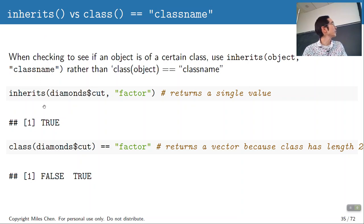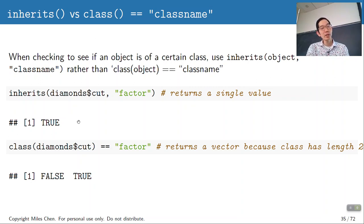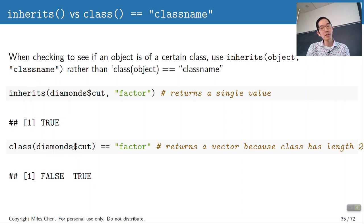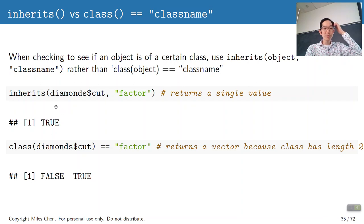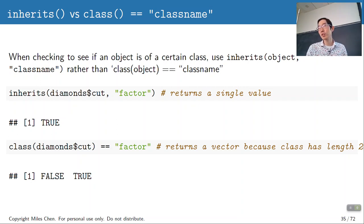You might ask why you have to use inherits() instead of just checking class(x) == 'fruit'. The difference is that because class can return a vector of values, checking class(cut) == 'factor' gives back a vector with false then true. It's preferable to use inherits() — 'does diamond inherit from factor anywhere along the way' — which returns a single logical value.